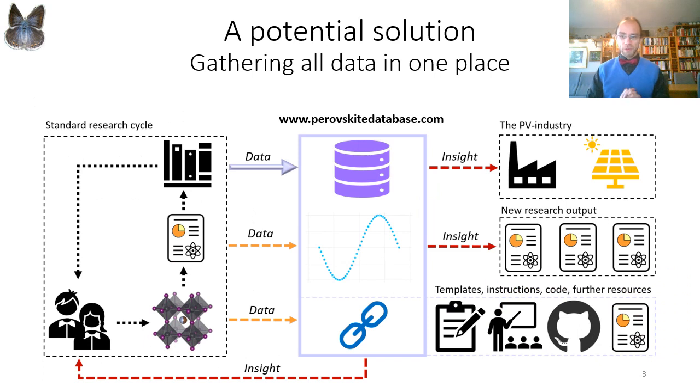A potential solution to that specific problem would be to have all perovskite data in one place, which happens to be the goal of the perovskite database project. Our idea is to expand the standard research cycle with an open database where we could collect all perovskite device data ever generated and connect this with simple and interactive searching, filtering, and visualization. We believe that this can generate entirely new insights, simplify literature research, help us design better experiments, and thereby accelerate the pace of discovery. What I hope to accomplish here today by showing a few examples is to convince you that this is a good idea and something you would like to be a part of.